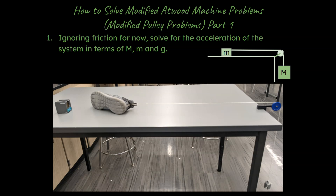Hey, what's good ladies and gentlemen? Let's talk about how to solve modified Atwood machine problems. So if you have a problem like this in a physics or AP physics class — a modified Atwood machine problem — like in this case you've got a pulley with a flat surface here and a hanging mass over here attached to a mass on the surface of the table. There's going to be a part two as well where I'll show you how to deal with a ramp scenario. So let's go ahead and get to it.